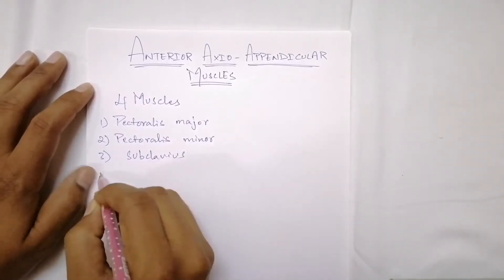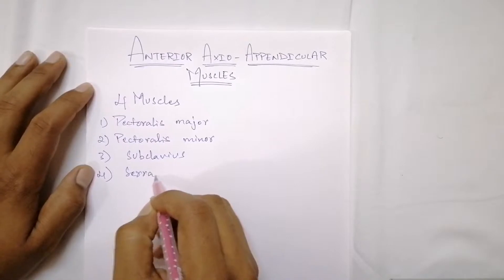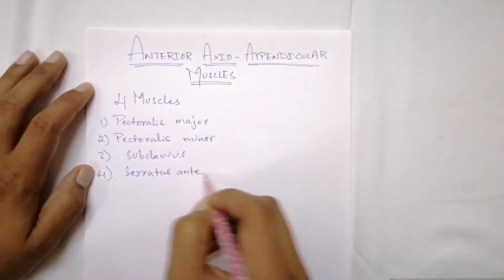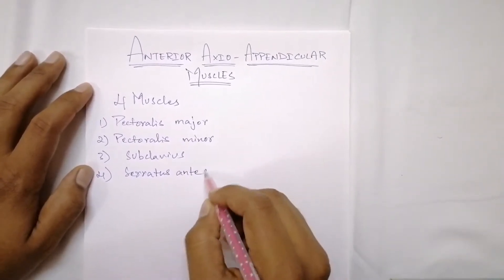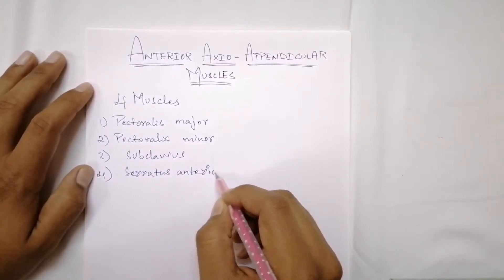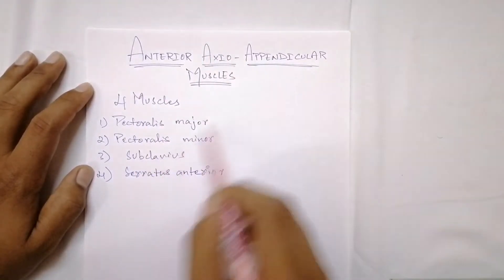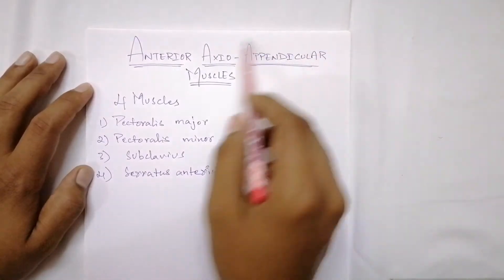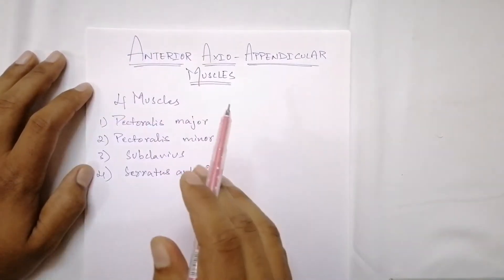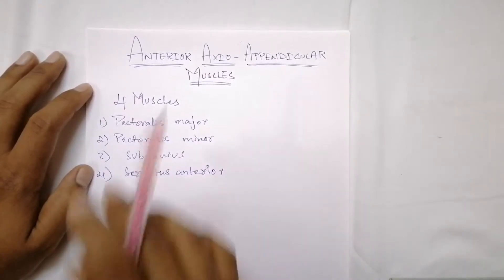These muscles connect the appendicular skeleton to the axial skeleton — that's why the name includes 'axio' and 'appendicular.' They essentially bridge the axial skeleton to the appendicular skeleton.